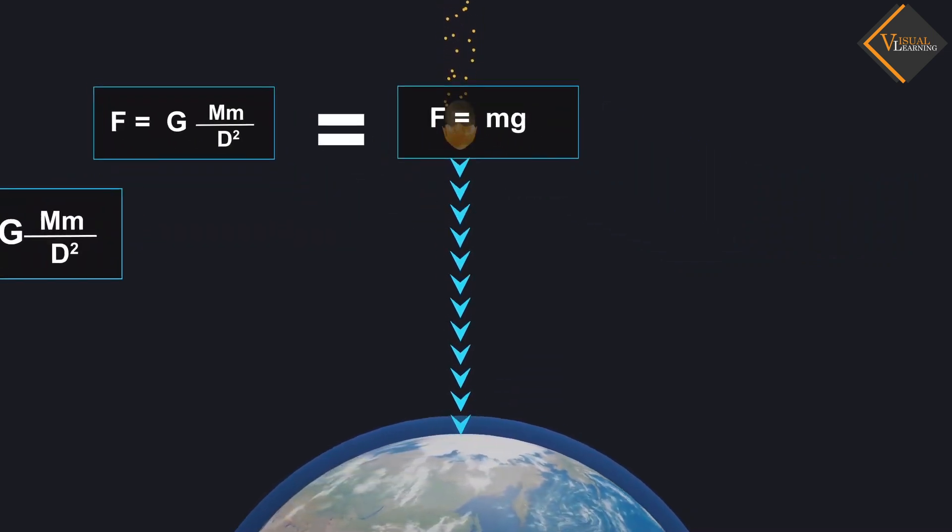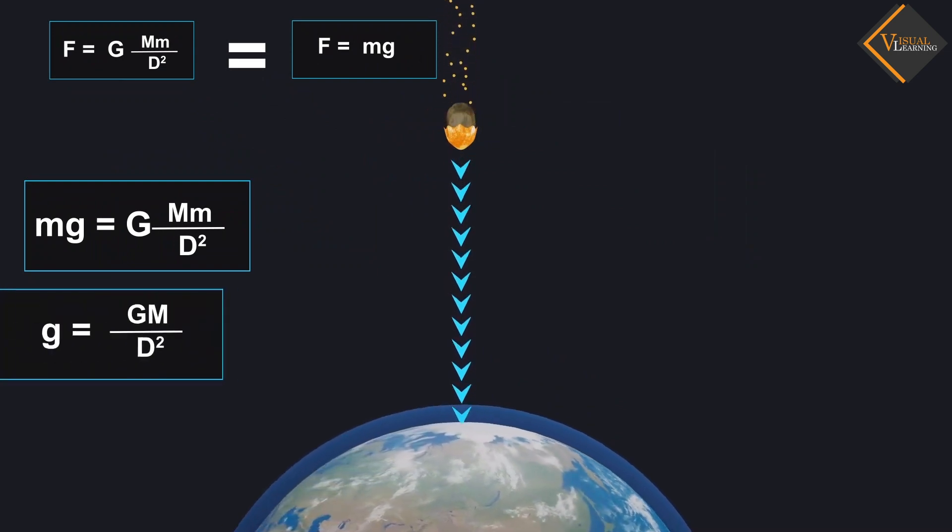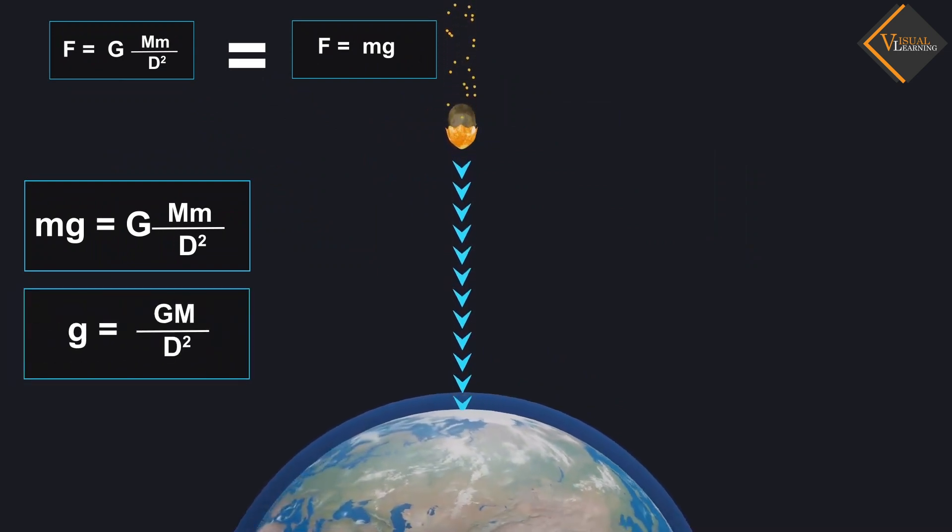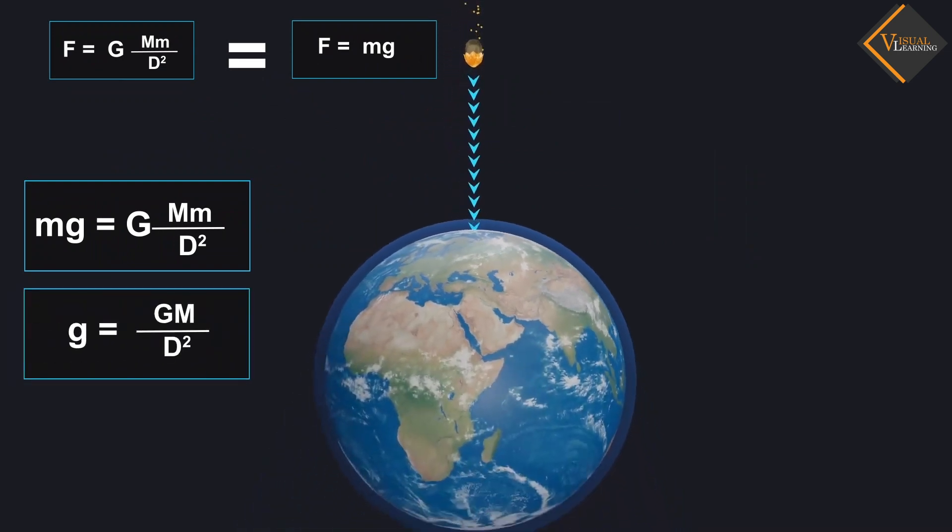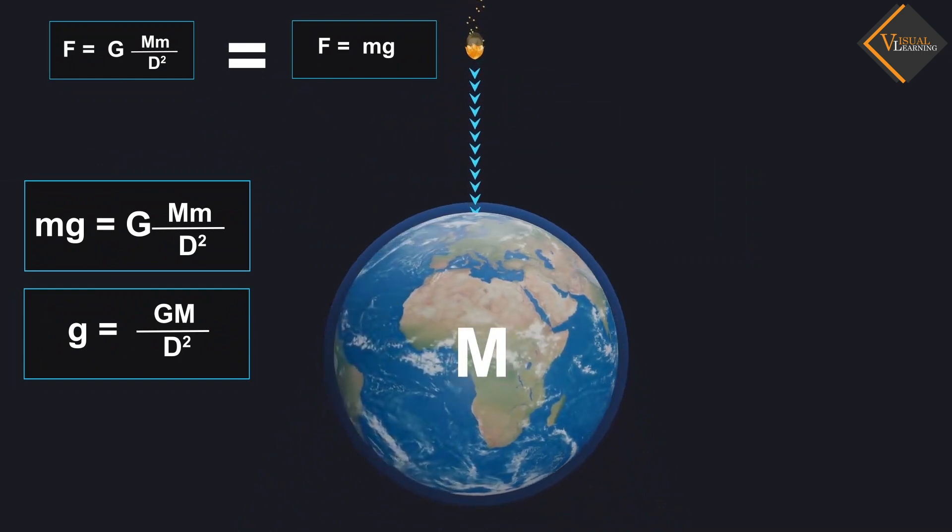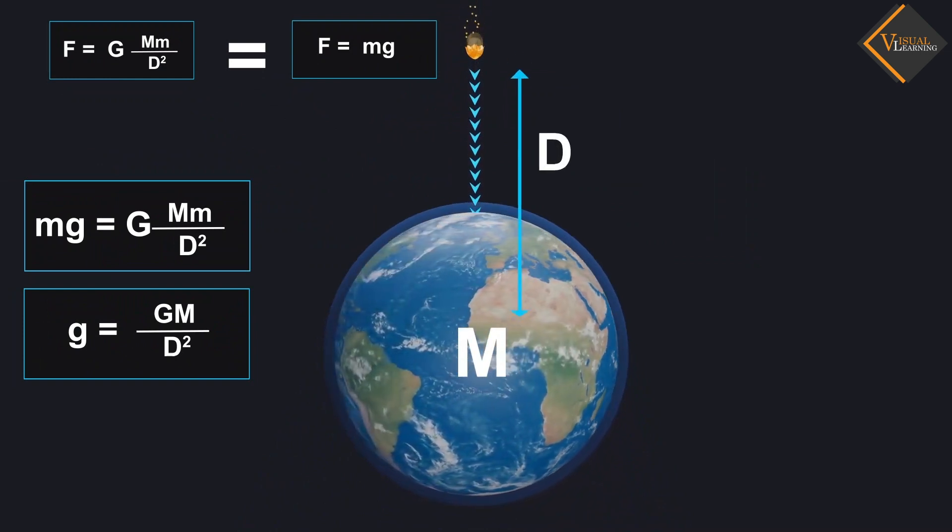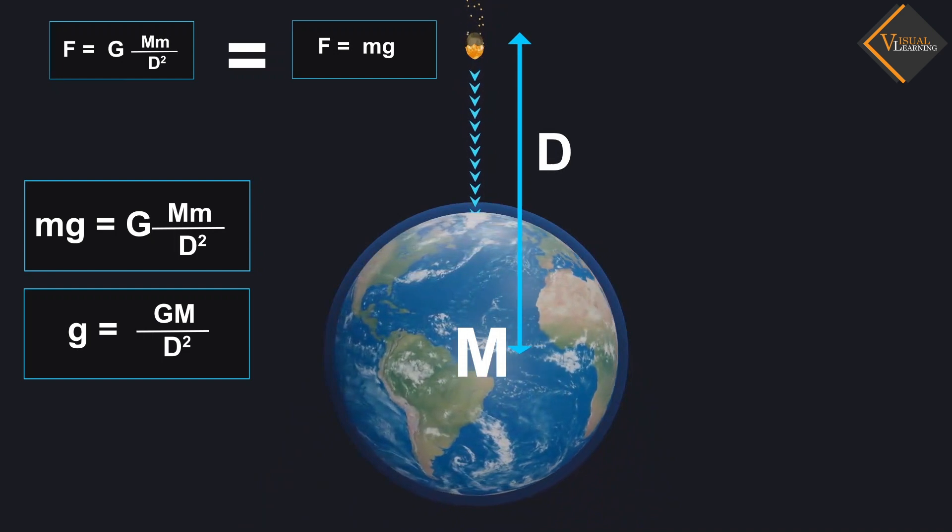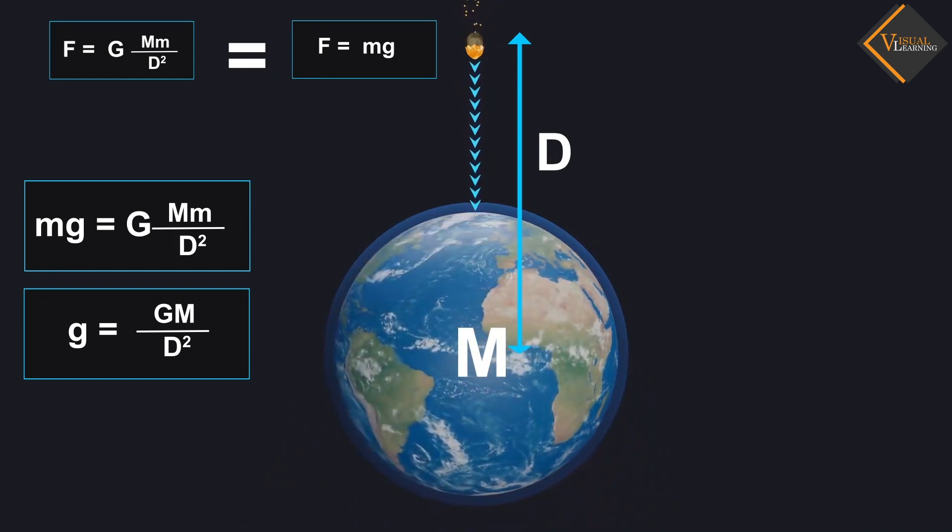By simplifying this equation, we get the value of g, which is called gravity. Where M is the mass of the Earth, and D is the distance between the object and the Earth from the center of the Earth.